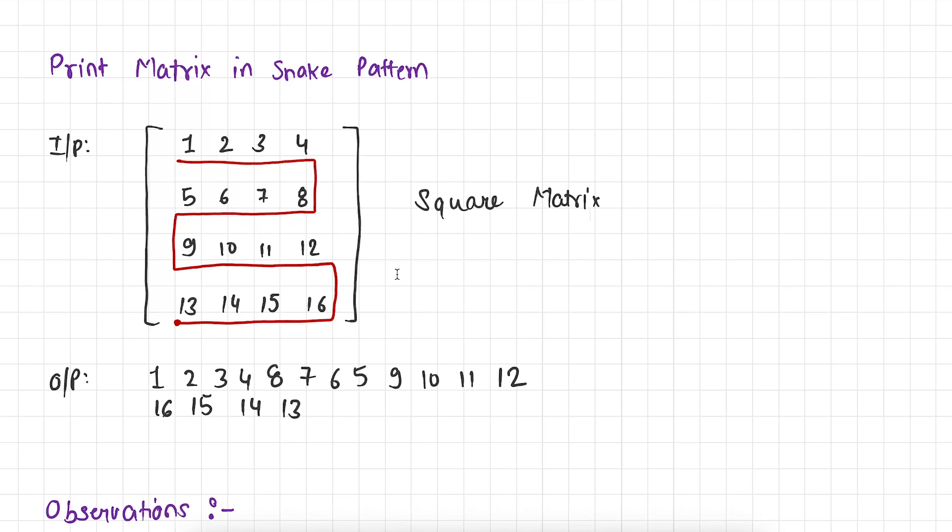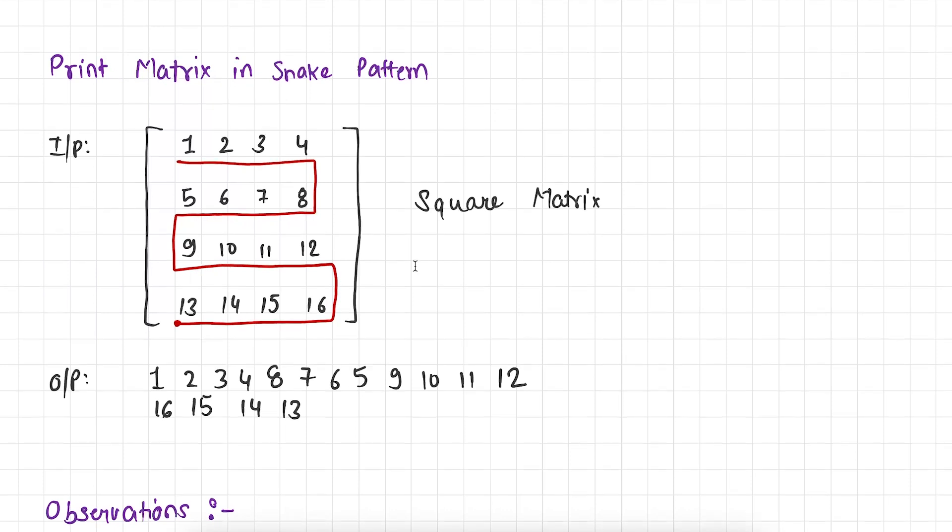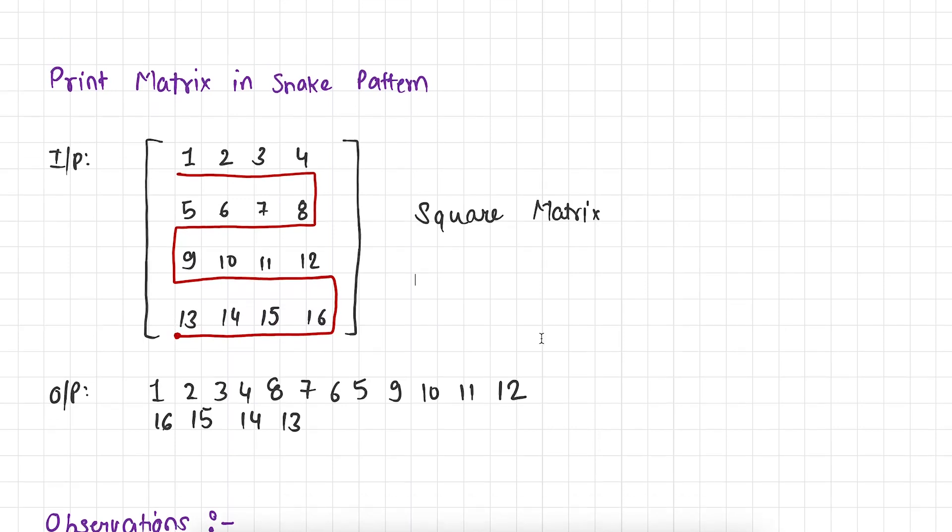Now the question over here is how snake pattern looks? So you can see here the snake pattern looks like this. So as per the snake pattern we have to print this matrix. So the output of this matrix comes out to be 1 2 3 4 8 7 6 5 9 10 11 12 16 15 14 13. Great! So I hope you understood this problem really well.